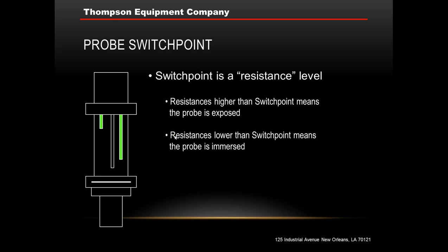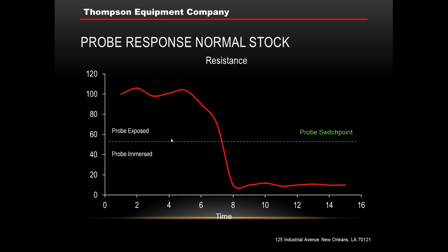The switch point is a resistance level. Resistances that are higher than the switch point are going to be interpreted by the system to mean that the probe is exposed — just hanging out there in air. Resistances which are lower than the switch point will mean that the probe is immersed in filtrate. Graphically, the probe switch point is the dashed line. Resistance values which are higher are interpreted to mean the probe is exposed, and lower values mean the probe is immersed.